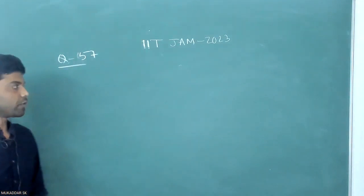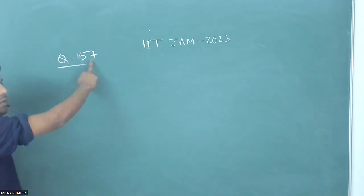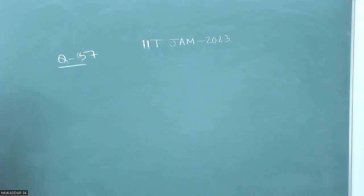Hello students, today we are going to solve a question from IIT JAM 2023. The question number is 57, and it is a part of atomic physics or modern physics.